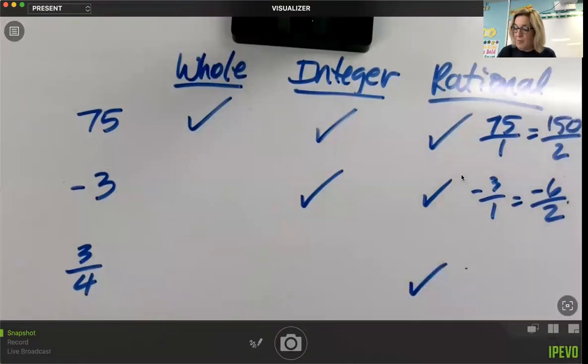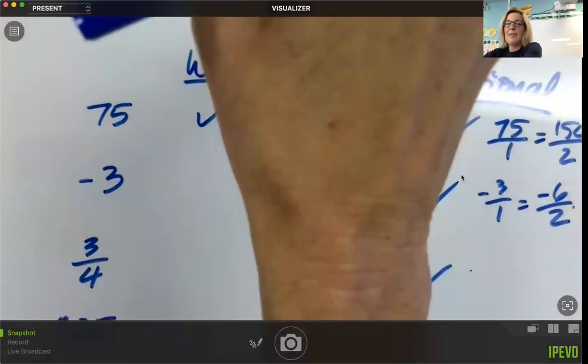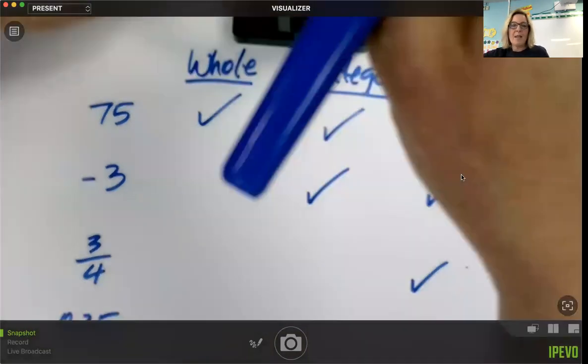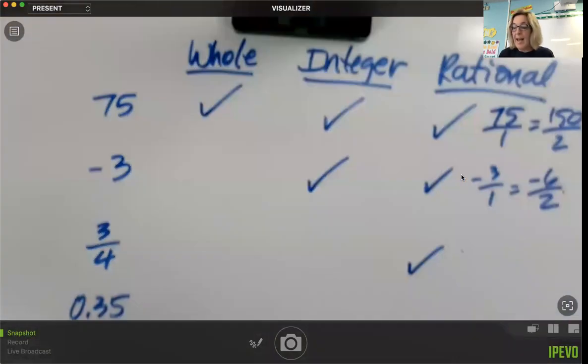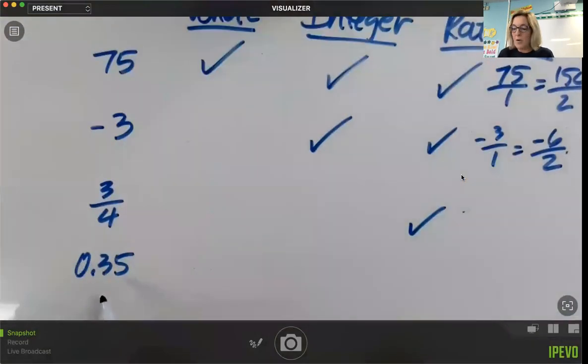All right, let's do one more. Thirty-five hundredths is how you read this number. Now next week we'll practice reading decimal numbers some more. Is it a whole quantity? No, it's a part. Decimals are another way of expressing a fraction. So no, they are not whole quantities. So if it's not a whole quantity, then it's not going to be an integer either.